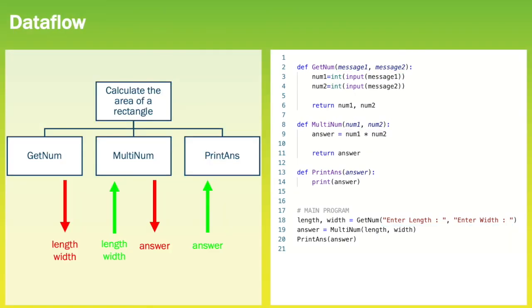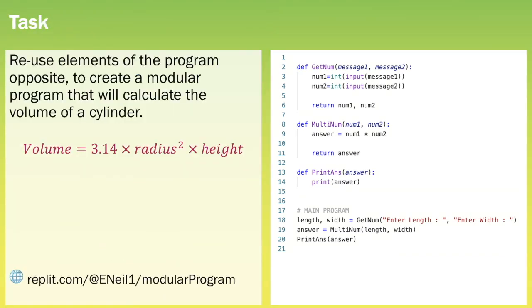From the main program we can identify the data flow. The data flow shows us the parameters that are passed into and out of each module. The get_num function returns the values 'length' and 'width'. In the middle, the multi_num function requires 'length' and 'width' and returns 'answer'. The print_answer procedure requires the value 'answer'.